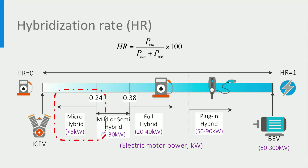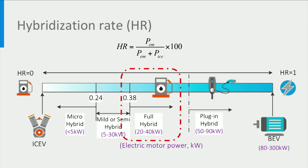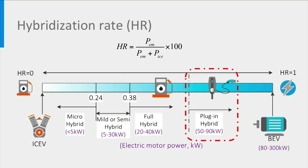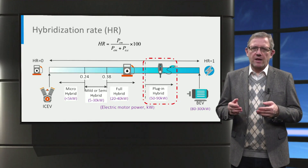When the hybridization rate value is smaller than 0.24, the hybrid electric vehicle is considered to be a micro hybrid. When the hybridization rate is between 0.24 and 0.38, it is distinguished as the semi or mild hybrid. When the hybridization rate is higher than 0.38, it is considered a full hybrid. Additionally, if the battery of a hybrid electric vehicle can be charged from a charging port, it is classified as a plug-in hybrid electric vehicle.